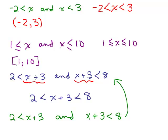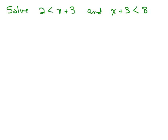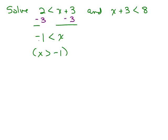So let's solve: 2 is less than x plus 3 and x plus 3 is less than 8. We would solve each separately. Subtracting 3 from both sides of the first gives negative 1 is less than x, which is the same as saying x is bigger than negative 1. If negative 1 is smaller than your solution, then all your solutions are bigger than negative 1.